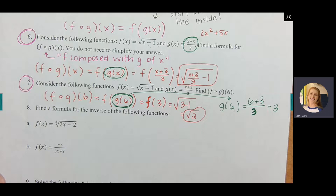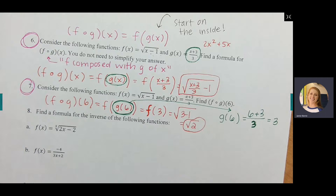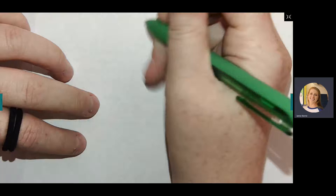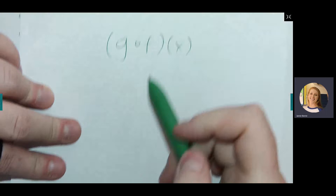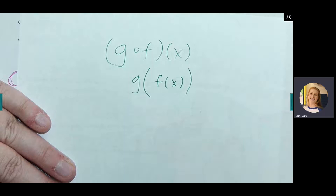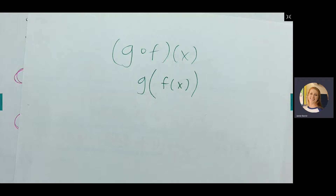The homework also includes g composed with f, f composed with f, and g composed with g. For the test, only f composed with g will be used. But know that g composed with f uses the same formula — you just switch the order: g goes on the outside and f goes on the inside.